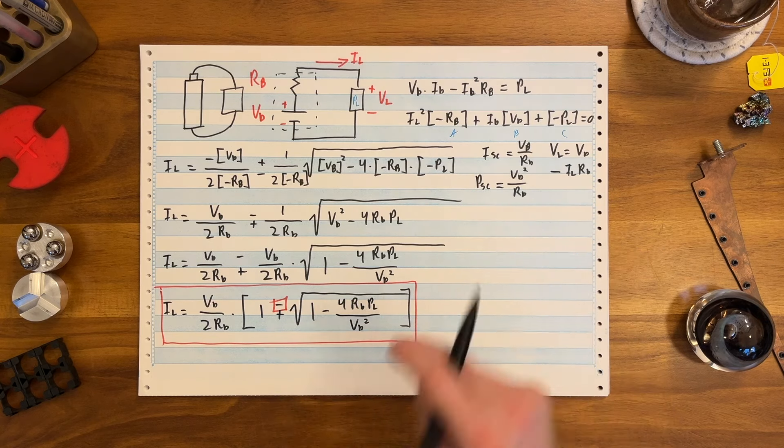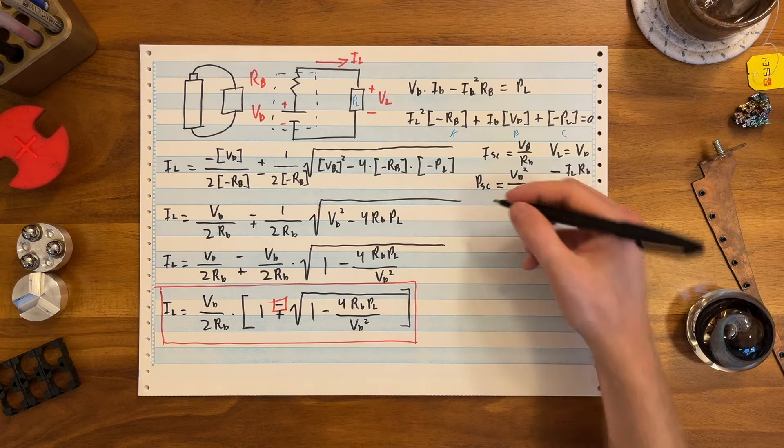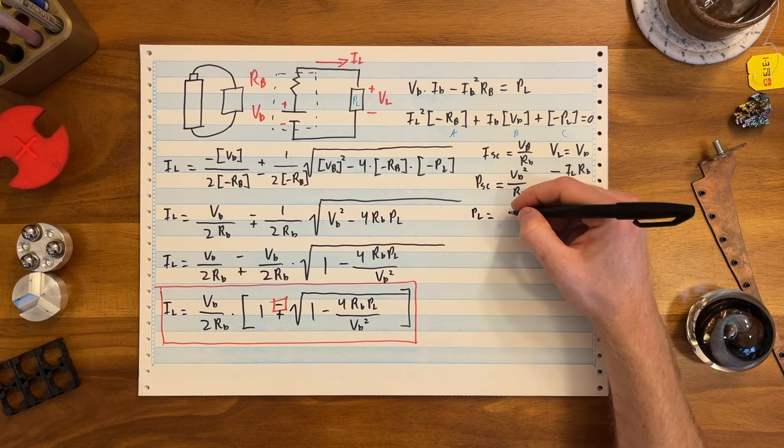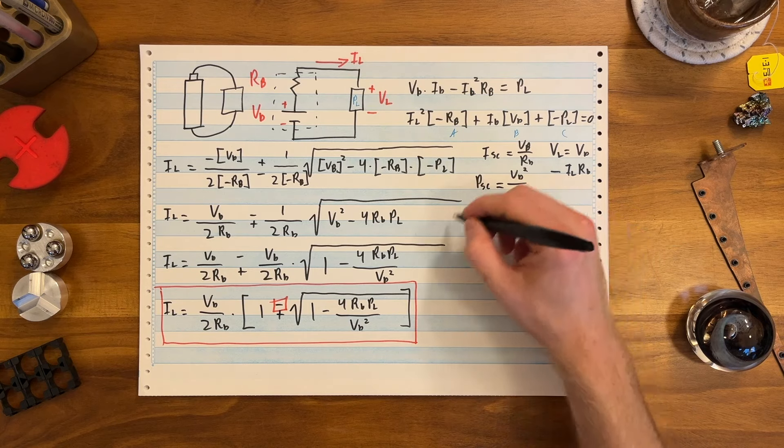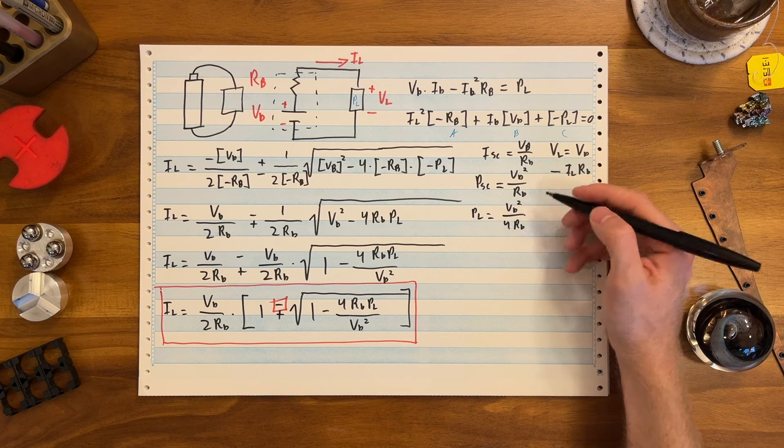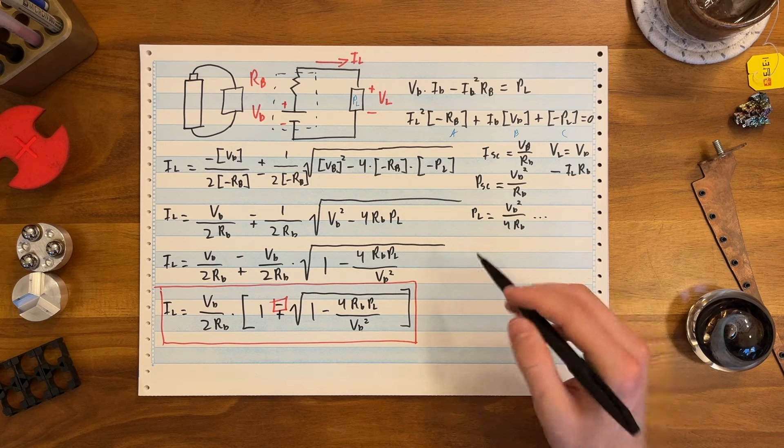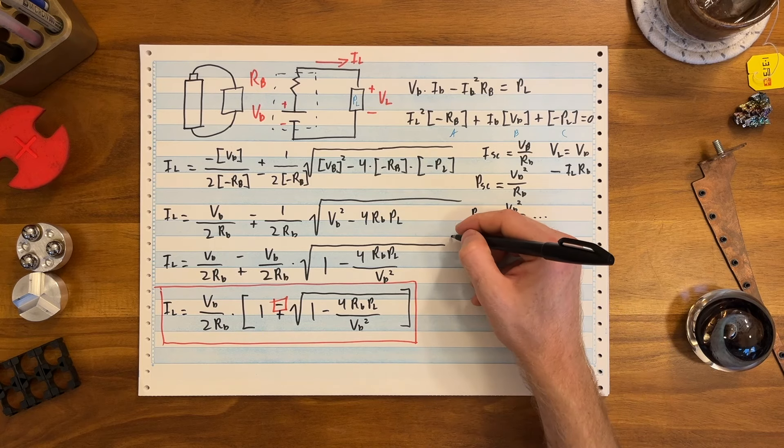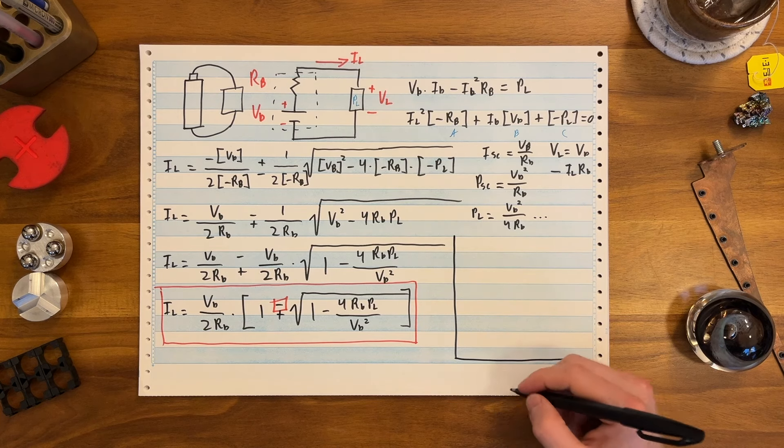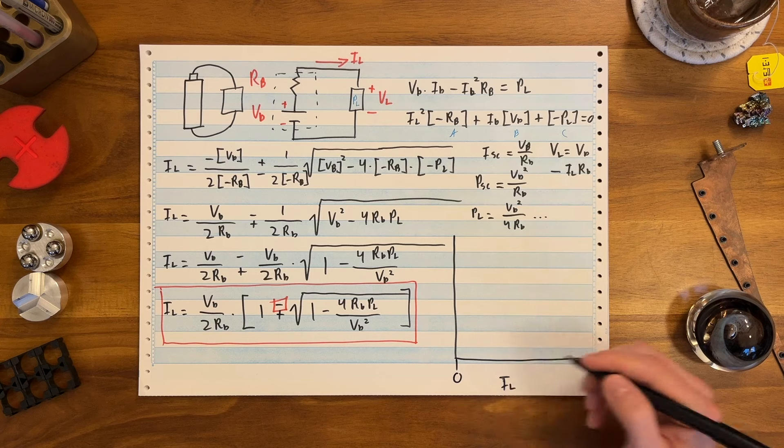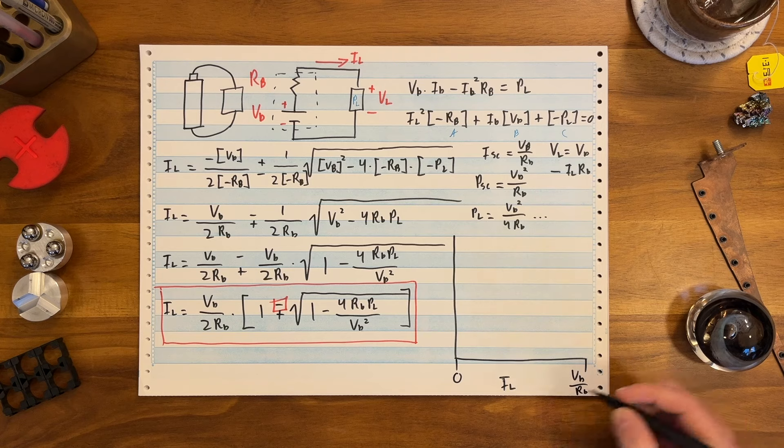Let's look at the limits here. Clearly, we can't have imaginary currents. So inside the radical, this has to be positive. What happens when this happens to go right to zero and we're on the edge of it being negative? Well, that's when 4RB PL over VB squared equals 1, which means P load equals VB squared over 4RB. That's interesting because that's actually one quarter of the short circuit power. That's going to be useful later.